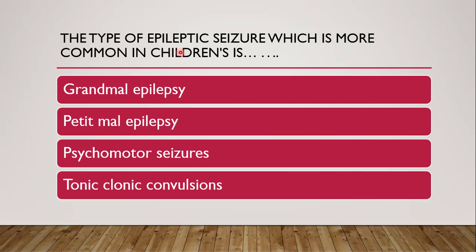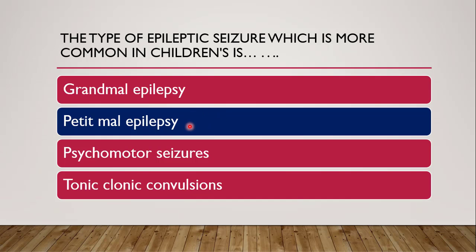Next question: the type of epileptic seizure which is more common in children is — grand mal, petit mal, psychomotor, or tonic clonic? The correct answer is petit mal epilepsy, also known as absence seizure. As shown in the image, the child expressed a blank look with no expressions. Petit mal, also known as absence seizure, generally occurs in children.